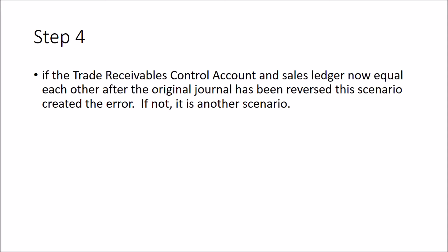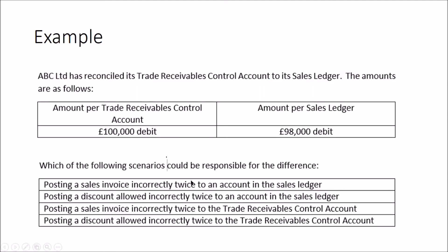You might alternatively be given an error that has happened and be required to explain the resulting difference. In that situation, you're given a scenario that's occurred and then asked what the difference between the control account and the sales ledger will be. Set up the journal that happened - for example, posting to the sales ledger twice - and determine which of the available options matches what was actually posted versus what should have been posted.